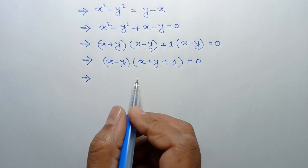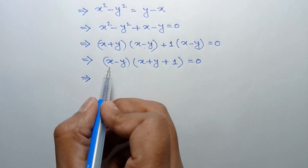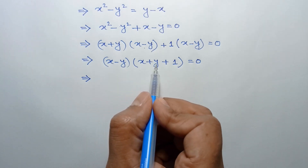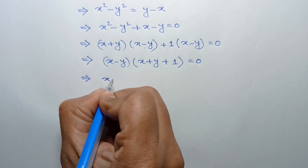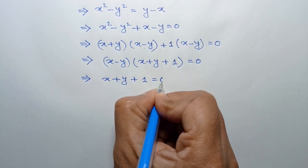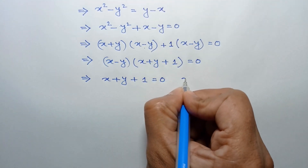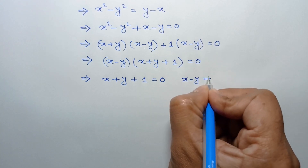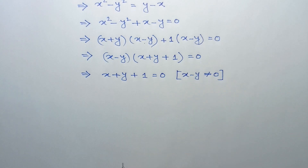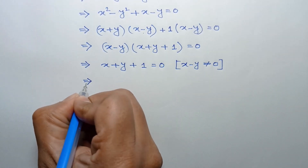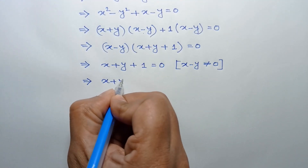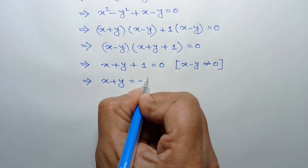Since x is not equal to y, x minus y is not equal to 0, so we must have x plus y plus 1 equal to 0. Taking 1 to the right side, we get x plus y is equal to negative 1.